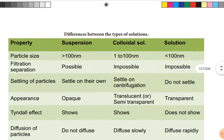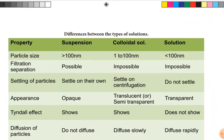Comparing properties: Particle size — in suspension, greater than 100 nanometers; in colloidal solution, 1 to 100 nanometers; in true solution, less than 1 nanometer. Filtration — possible in suspension because particles are very large, but not possible in colloidal solution or true solution.